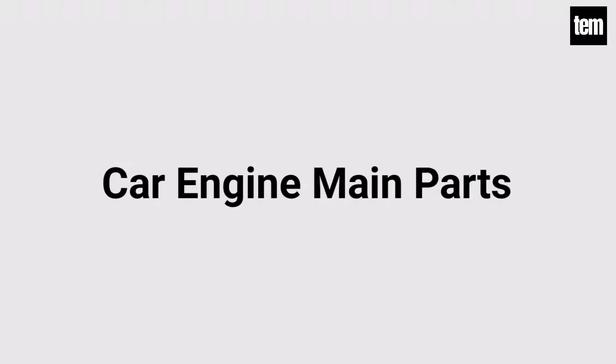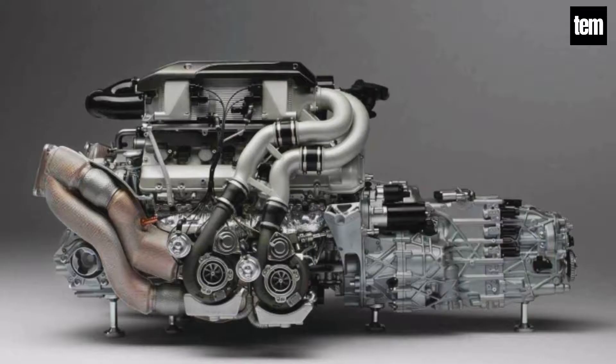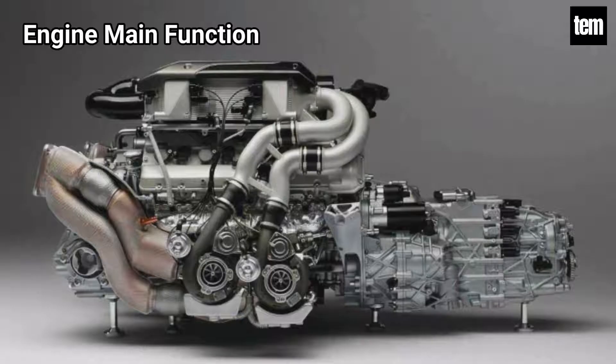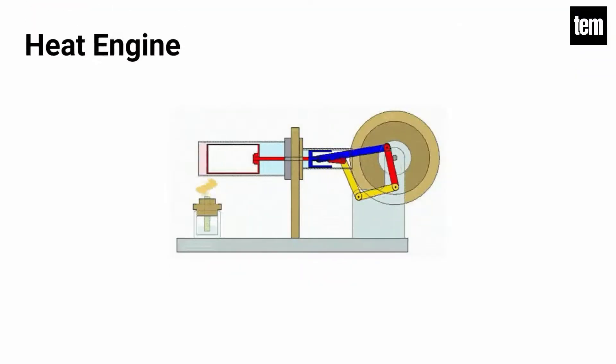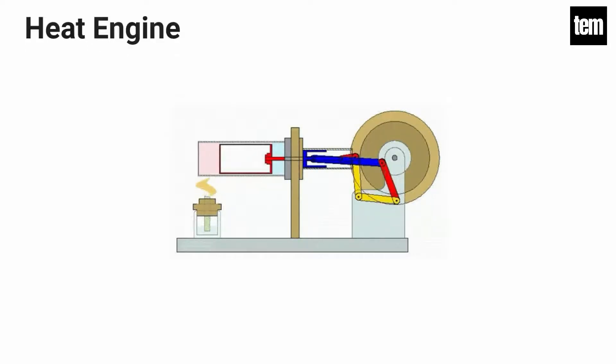Hello guys, today we are talking about car engine main parts. An engine is a machine device to convert one form of energy into mechanical energy. Heat engines burn fuel to create heat, which is utilized to perform useful work. It is a complex machine built to convert heat from burning gas into the force that turns the wheels.